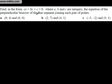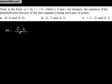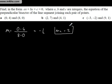Now, finding the perpendicular bisector of a line segment joining a pair of points, in the form ax plus by plus c equals 0 where a, b, and c are integers. First find the gradient of the line: M equals change in y over change in x, which is (0 minus 4) over (8 minus 0) = minus 4 over 8 = minus one half. So the perpendicular gradient M2 is positive 2, since M1 times M2 equals negative 1.